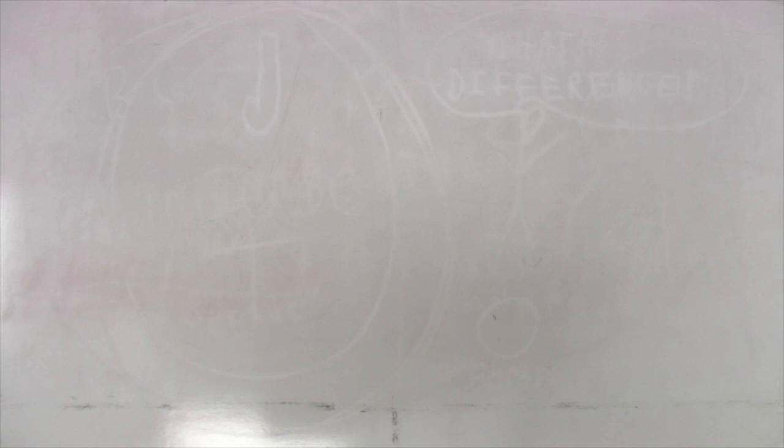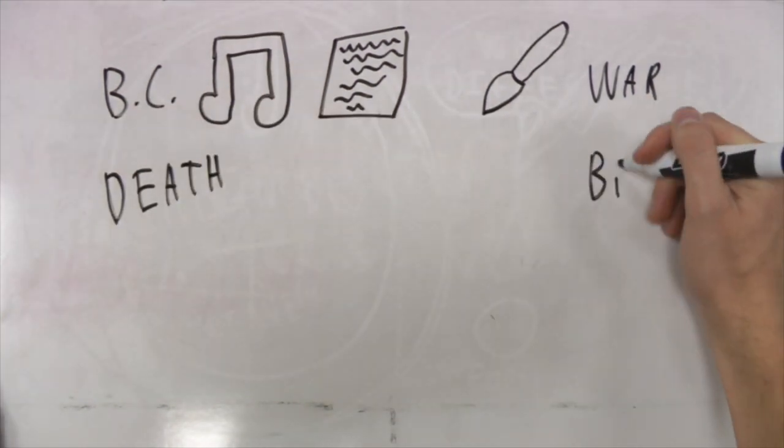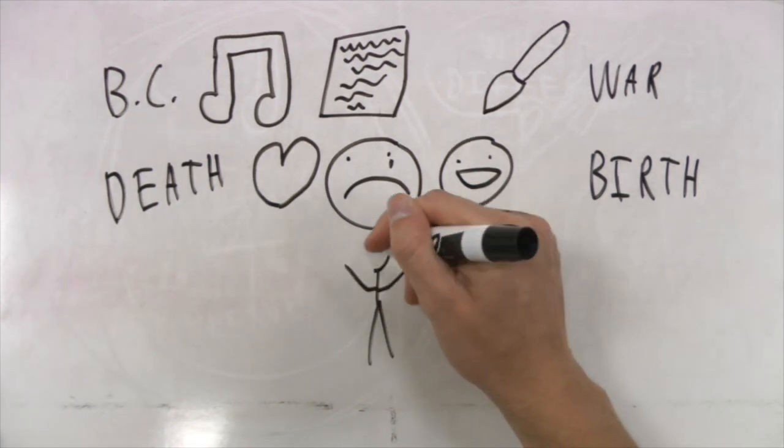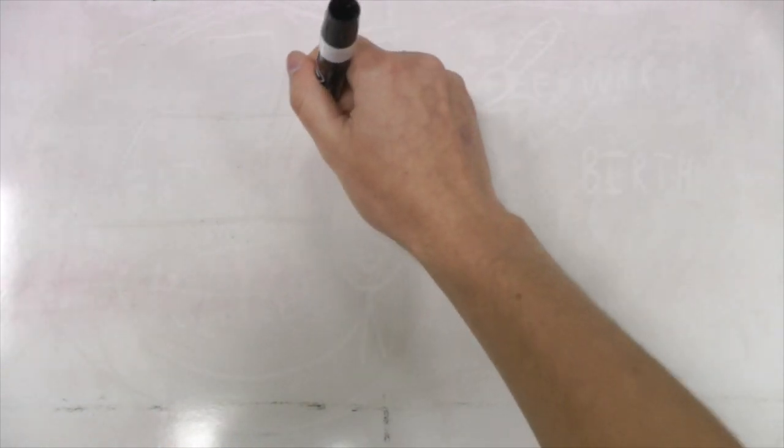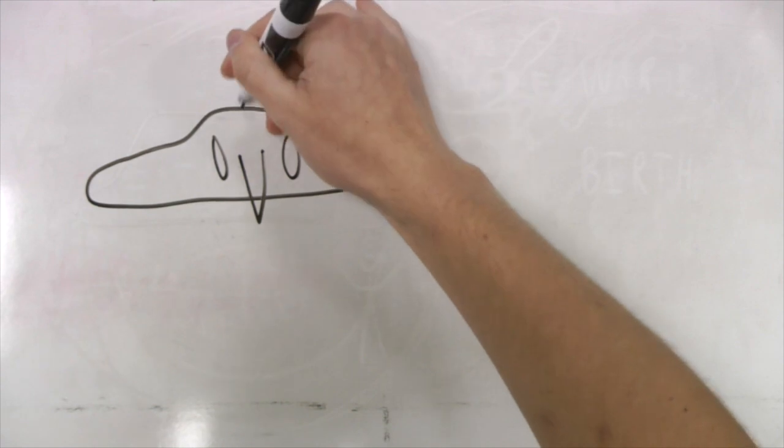It becomes so small and so fragile. It's such a precious little spot in that universe that you can block it out with your thumb. And you realize that on that small spot, that little blue and white thing is everything that means anything to you. All of history and music and poetry and art and war and death and birth and love, tears, joy, games, all of it is on that little spot out there that you can cover with your thumb. And you realize that that perspective, that you've changed, that there's something new there. That relationship is no longer what it was.